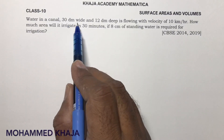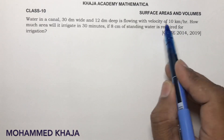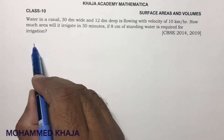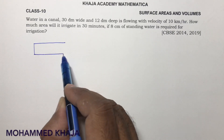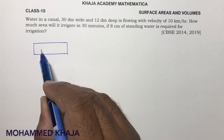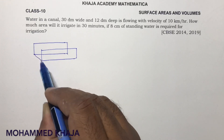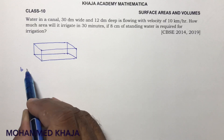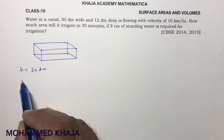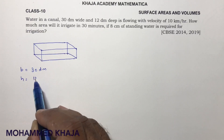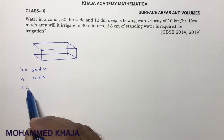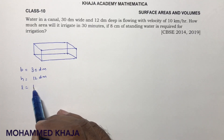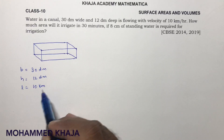Water in a canal — breadth and height are given, and the velocity or speed is 10 kilometers per hour. This 10 kilometers will be the length, because we take the canal in the shape of a cuboid. Breadth is 30 dm, height is 12 dm, and length is the speed — whenever they give speed, that will be the length of the canal. Here length is 10 kilometers per hour.